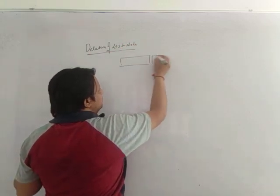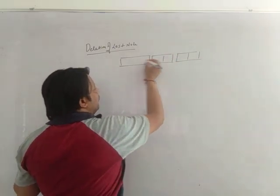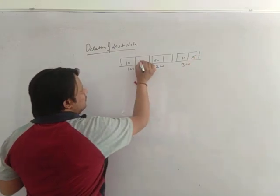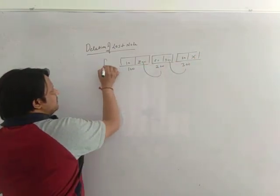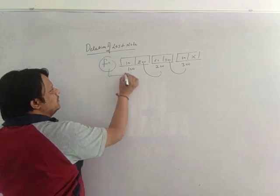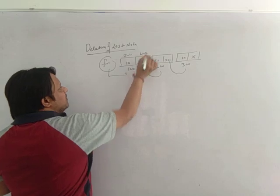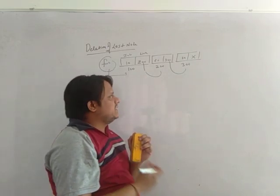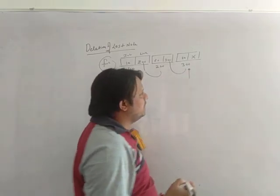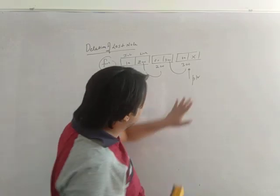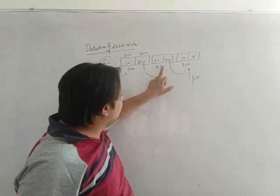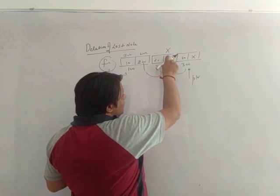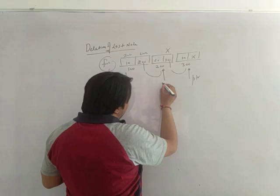For the last node deletion, consider a linked list where first always points to the first node, with an info part and a link part. If I want to delete the last node at address 300, the node at 200 becomes the new last node. Its link part must be set to null. So both address 300 and address 200 are important — let's call the pointer to 300 ptr and the one to 200 cpt.